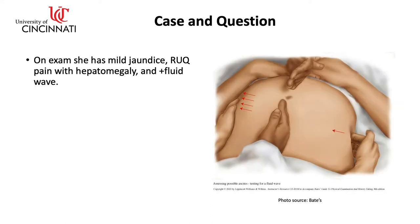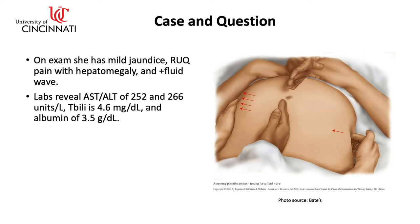On exam, she has mild jaundice, right upper quadrant pain with hepatomegaly, and a positive fluid wave. Her labs reveal an AST and ALT of 252 and 266, with a T-bili of 4.6 and an albumin of 3.5. CBC, renal, and INR are otherwise normal.